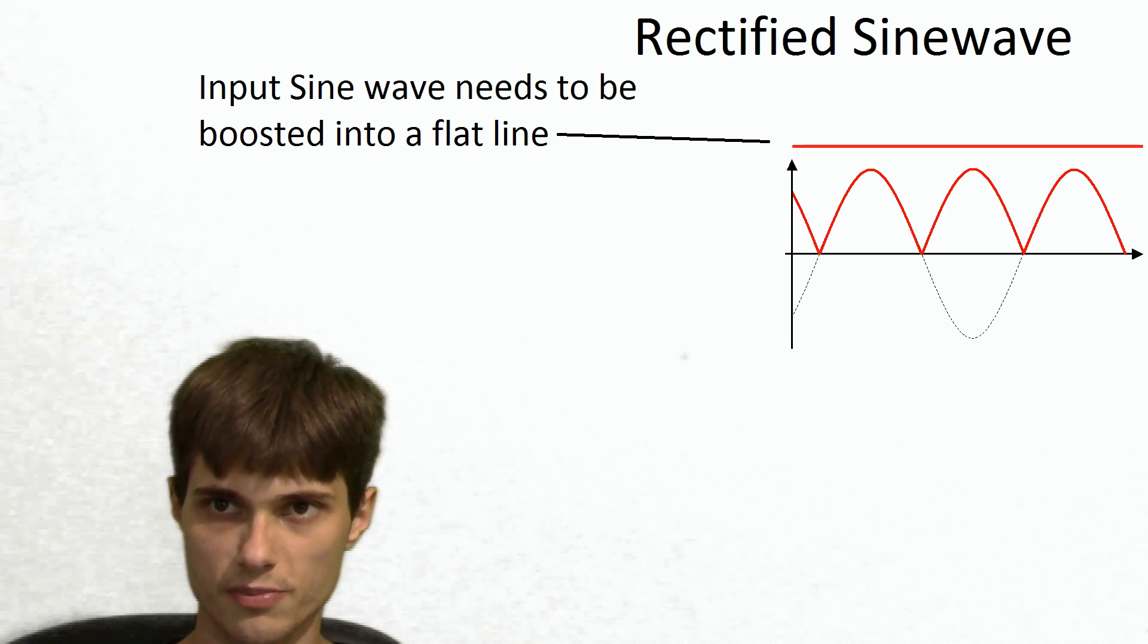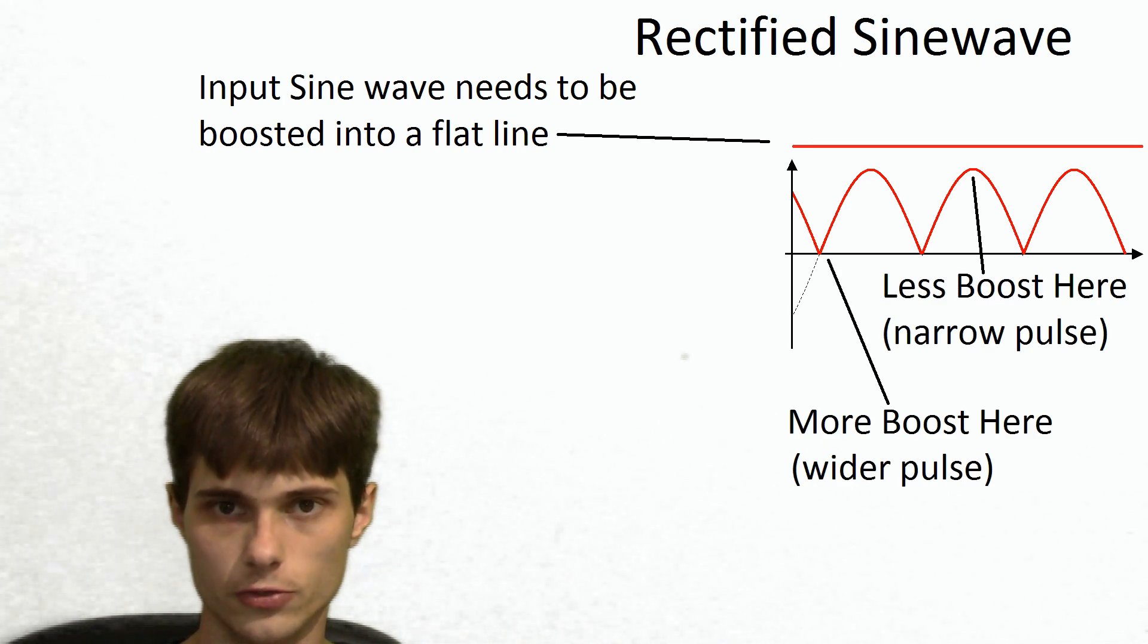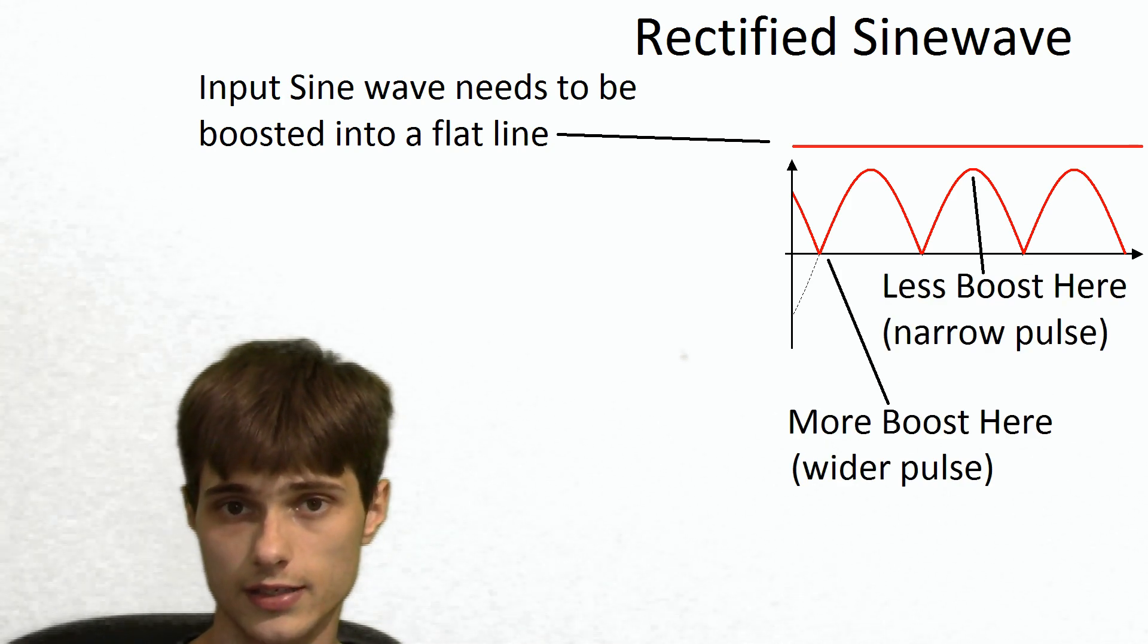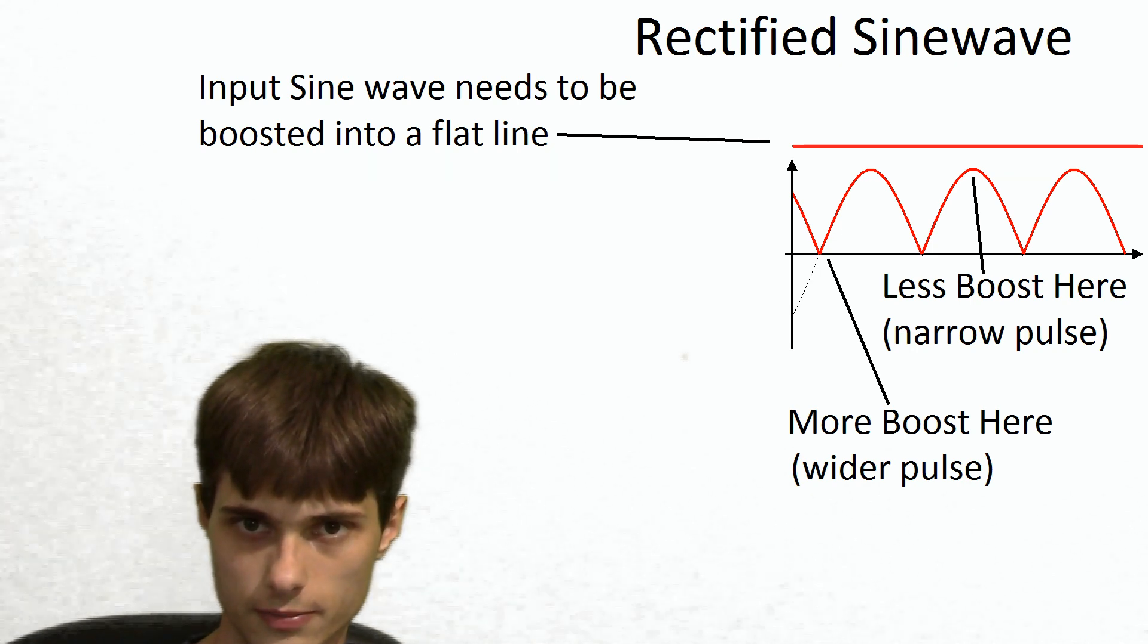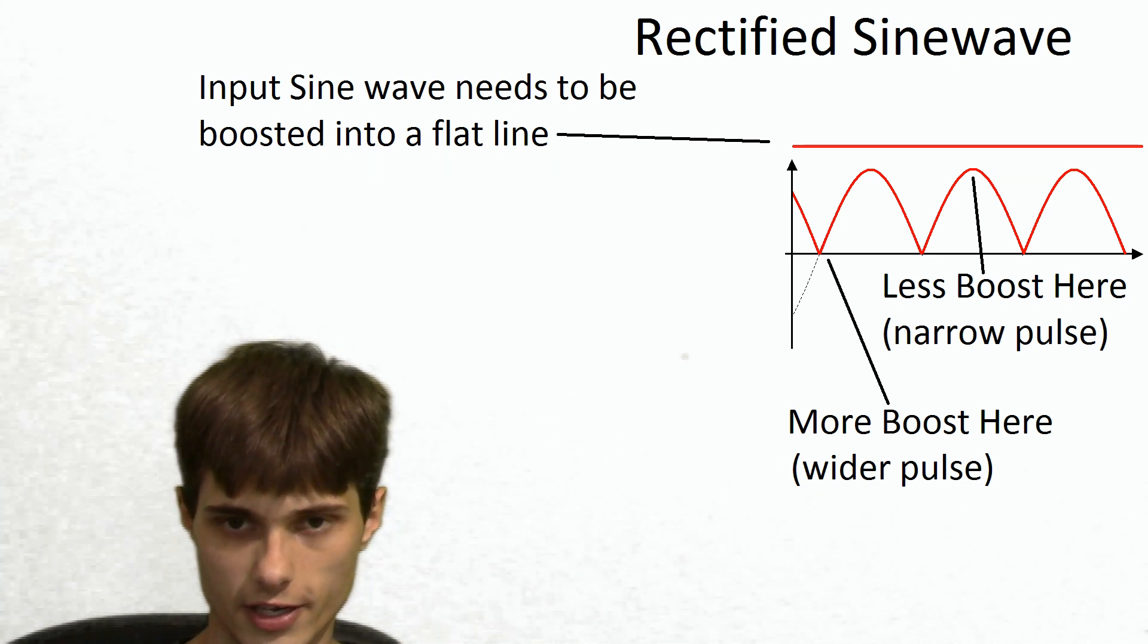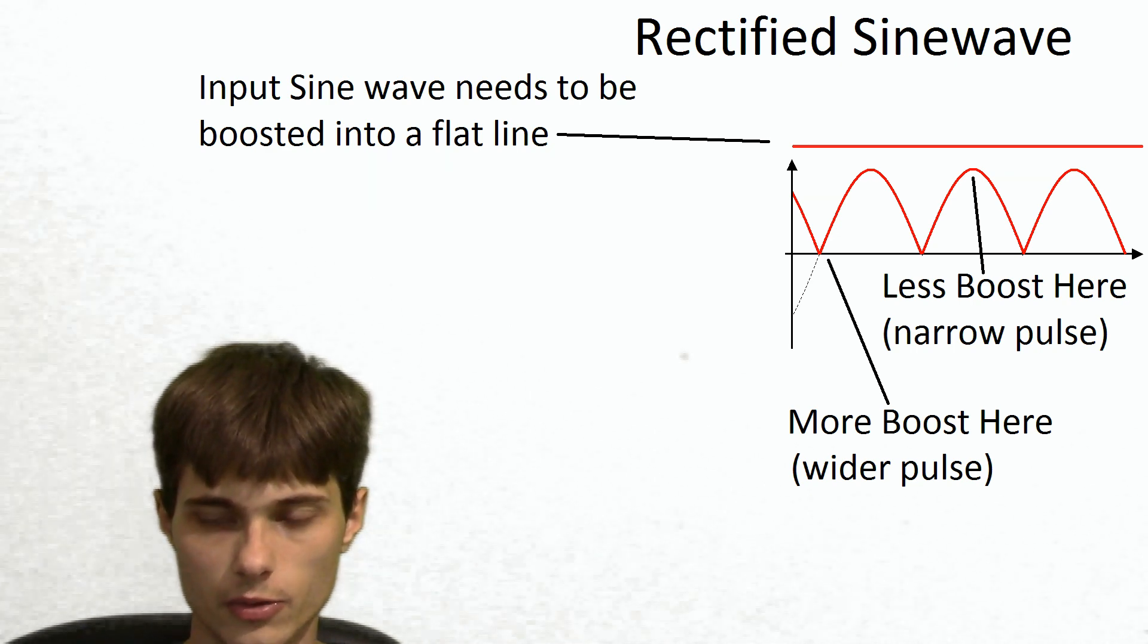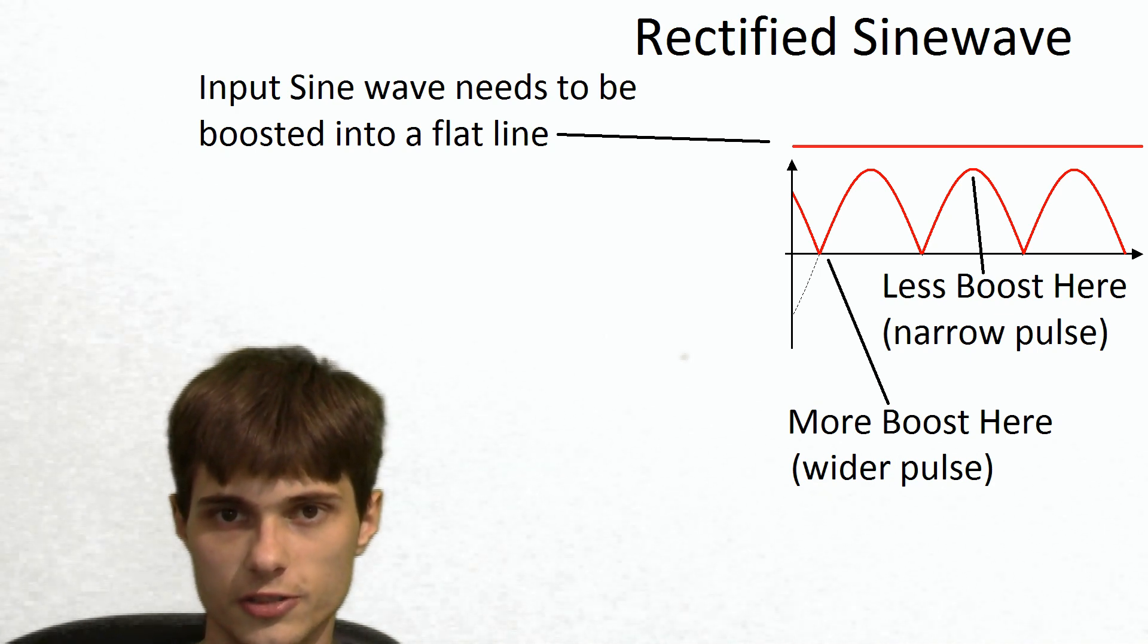We just need a device to measure the input voltage from the rectifier, compare that, and generate a pulse width. So, for example, if the sine wave is risen halfway, then we're going to need a fairly wide pulse, so we need a lot of voltage boost there. But once the sine wave reaches a peak, then the pulse gets narrow because we don't need as much boost there.